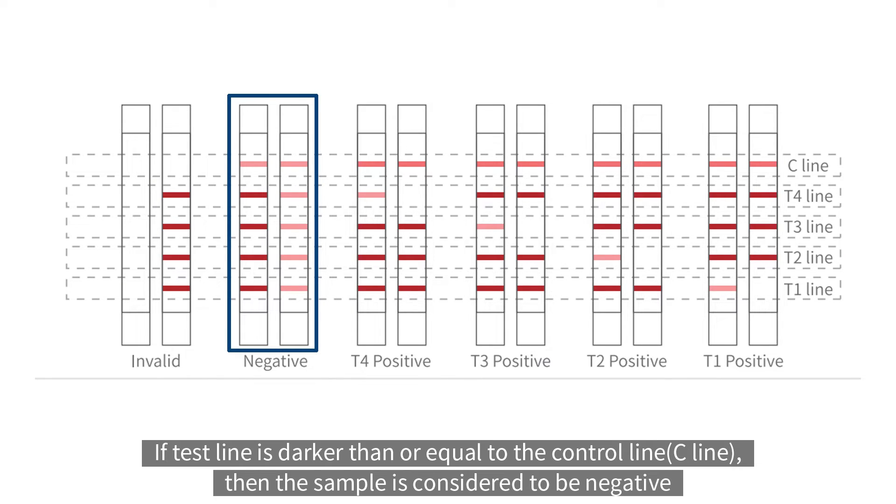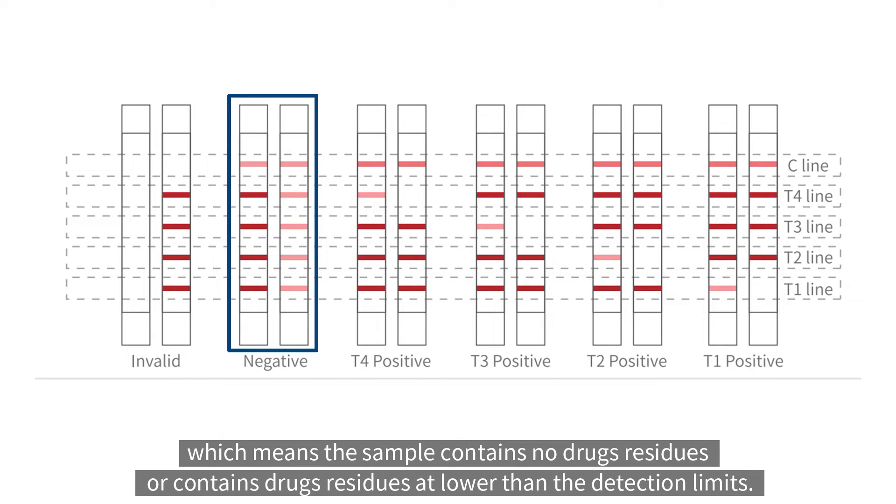If test line is darker than or equal to the control line, then the sample is considered to be negative which means the sample contains no drugs residues or contains drugs residues at lower than the detection limits.